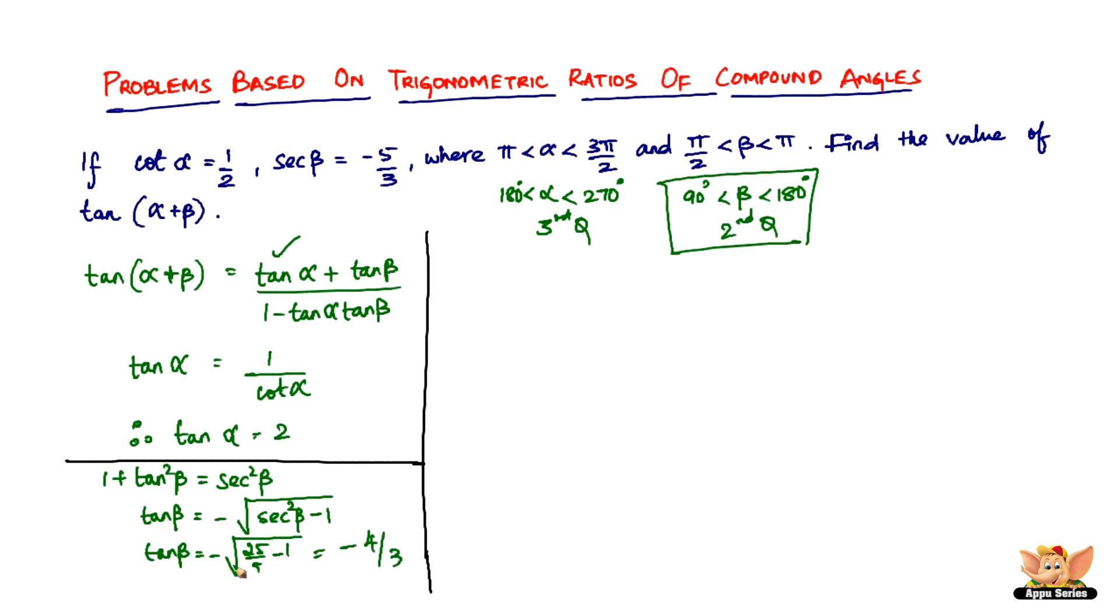So therefore tan β is minus 4/3. We found the values of tan α and tan β. All we have to do is just substitute it in this formula.